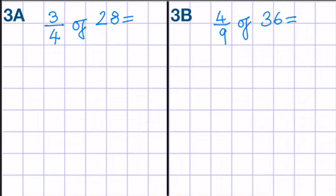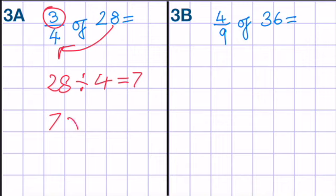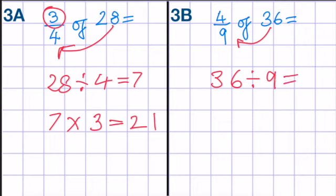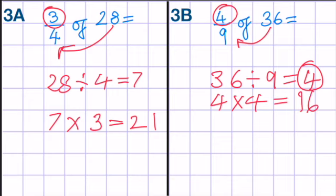For 3a, you need to find 3 quarters of 28 and 4 ninths of 36. Press pause and we'll do it together. So first things first, we divide by the denominator. 28 divided by 4 equals 7. And then we times that answer by the numerator. 7 times 3 is 21. For this one, we do 36 divided by 9. 36 divided by 9 is 4 because 4 times 9 is 36. And now we need to do 4 times 4 because we're timesing this answer by the numerator. That's 16. So, 3 quarters of 28 is 21, and 4 ninths of 36 is 16.